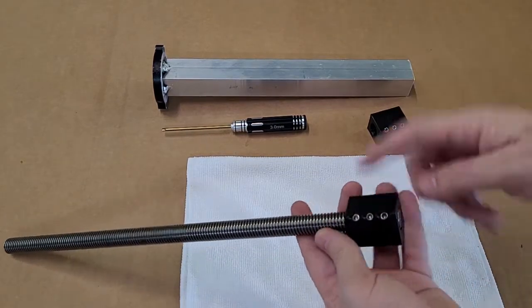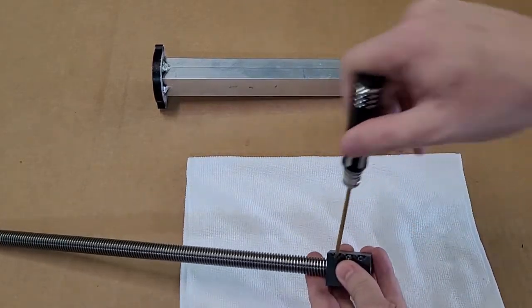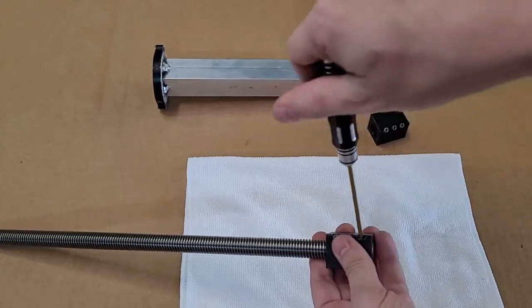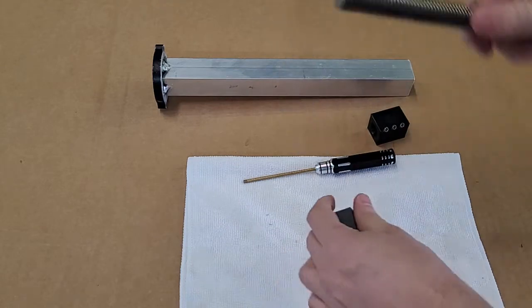On the top of the Acme screw there is a flat portion in which these three set screws are connected to while pressing down on. So let me get a close-up of that.